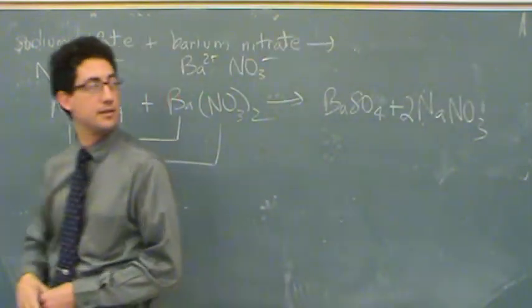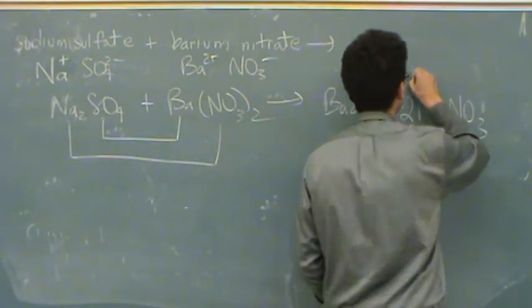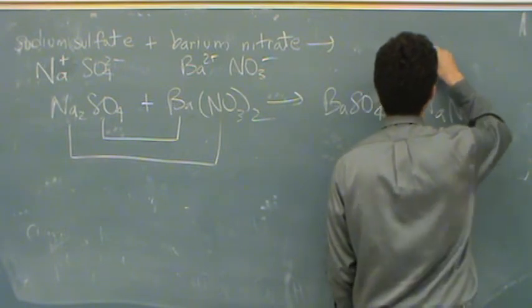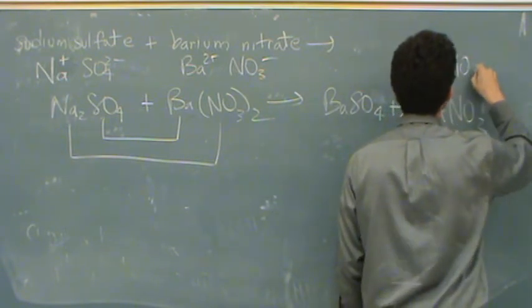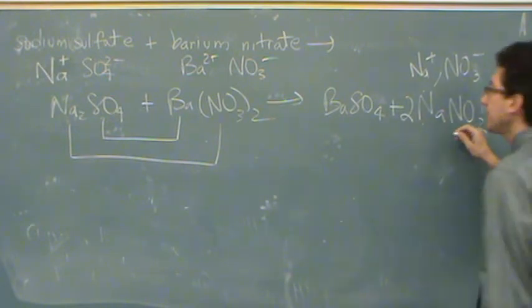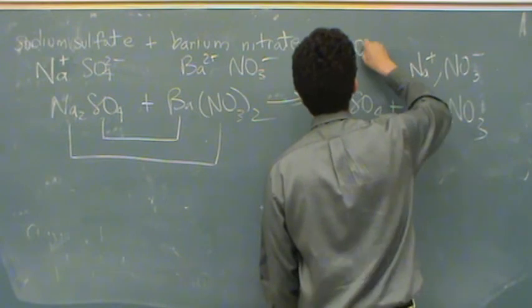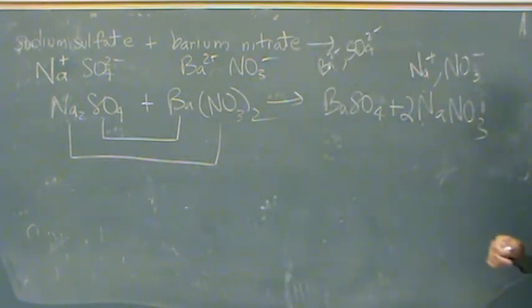Why on the last part, why does the NO3 have the two like it did? Why does the NO3 have the materials here? Because sodium is plus one and nitrate is minus one, so one of each go together. Here, barium is two plus and sulfate is two minus, so one of each go together as well.